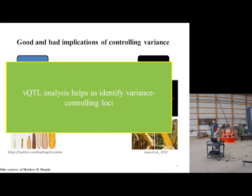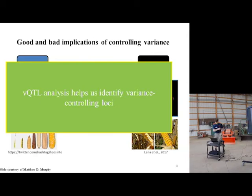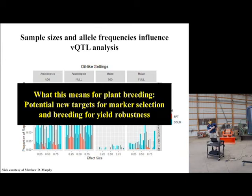The bad side is that if you select for too narrow a variability and you have an off field season, you might get a resulting maize that just doesn't look good. So VQTL analysis helps us identify variance-controlling loci.